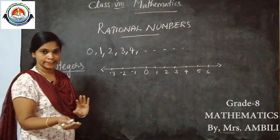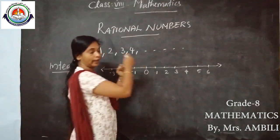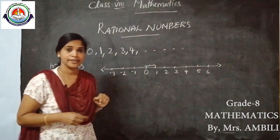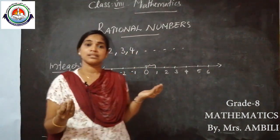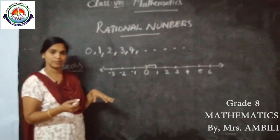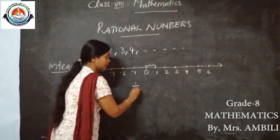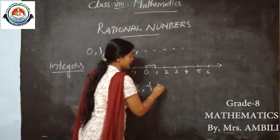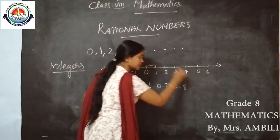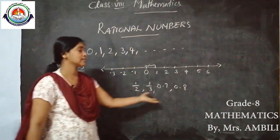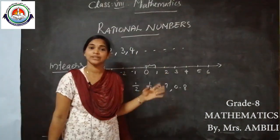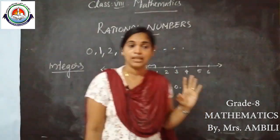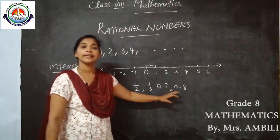Now take any two integers. Here I am taking 0 and 1. Between these two integers, are there any numbers? Yes, of course, there are many numbers. I am taking 1/2, 1/3, 0.7, 0.8. That is, fractions and decimals are also there between two integers — these are non-integers.